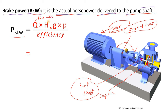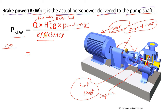Q is the flow rate of the liquid — let's suppose water — which you have to pump from one location to another. H is the differential head. G is the acceleration due to gravity. Rho (ρ) is the density of the liquid you are pumping. Divided by efficiency — if you know it from the vendor's data sheet, use it; otherwise you can assume 0.6.